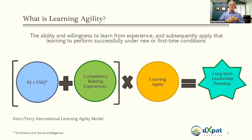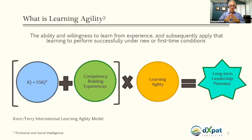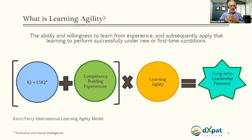With that information, Lombardo and Eichinger defined the concept of learning agility: the ability and willingness to learn from experience and to purposely apply those lessons learned under new or first-time conditions. It's not just getting exposed to new experiences or being promoted to a higher level of responsibility — it's what you do with it, the willingness and focus to learn, and the intention of applying new skills in new or first-time conditions.